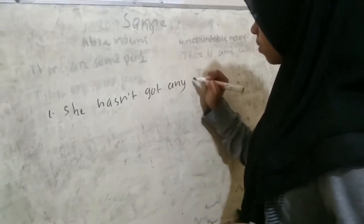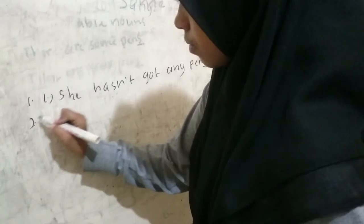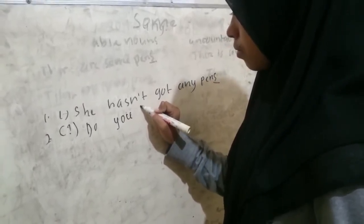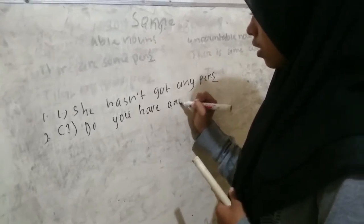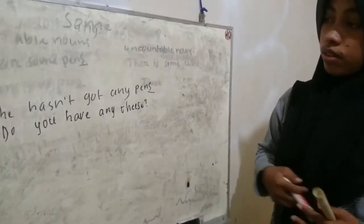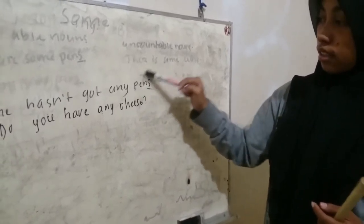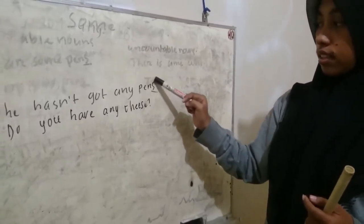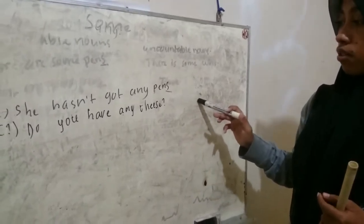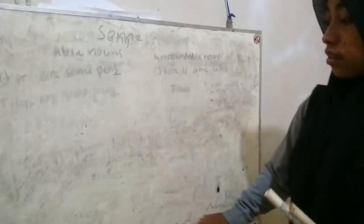Example of a negative sentence: 'She hasn't got any pen.' Here, 'pen' is a countable noun. Example of an interrogative sentence: 'Do you have any cheese?' Here, 'cheese' is an uncountable noun.